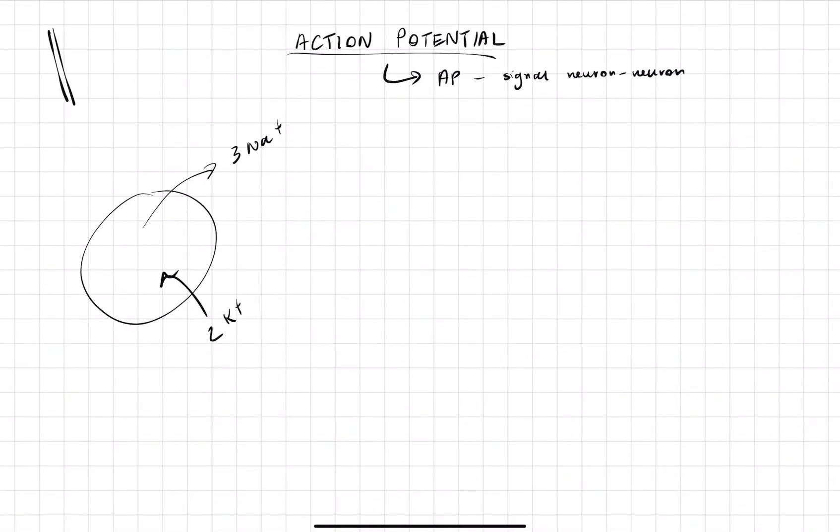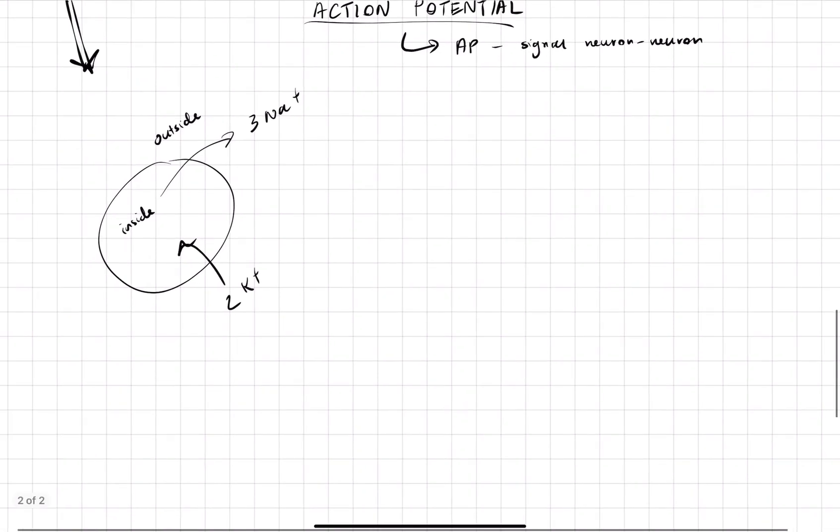We're going to have to zoom in on an example cell over here to see how that happens. So this is the outside of the cell, and this is the inside of the cell. And usually, the inside of a cell will be more negative than positive. More negative than positive is usually sitting around negative 70 millivolts.